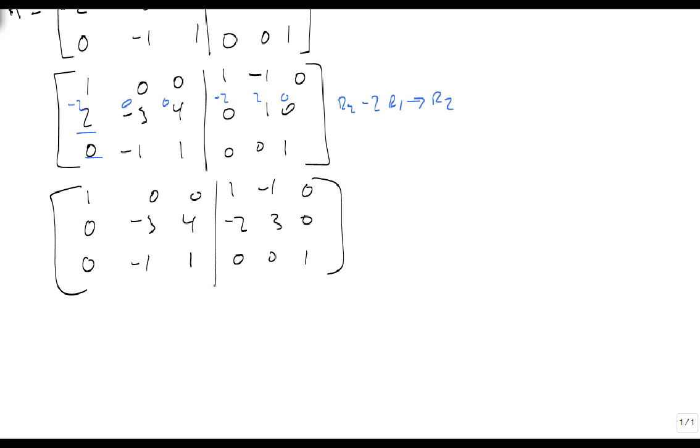Now, same type of idea, we need to get this spot right here to be a 1. So I'm going to swap the rows first. Let's just swap row 2 and row 3. So 0, minus 1, 1, 0, 0, 1. And 0, minus 3, 4, minus 2, 3, 0.